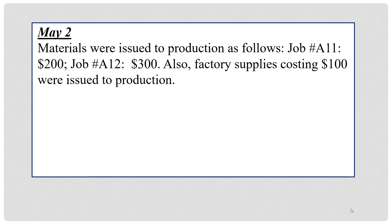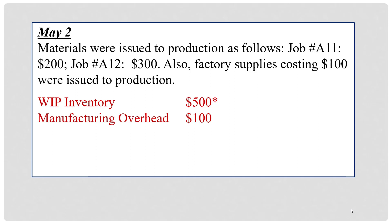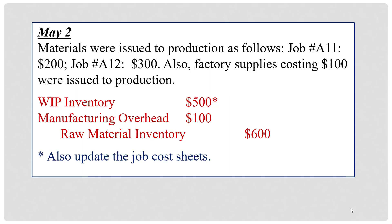On May 2, materials were issued to production as follows: Job A11, $200; Job A12, $300. Also, factory supplies costing $100 were issued to production. Notice that for direct materials you must specify what job those are going to, but for factory supplies you just see the amount. All $600 needs to come out of the raw material inventory account since it is no longer in the storeroom ready for use. Anytime you debit work in process, you're going to update the job cost sheets.